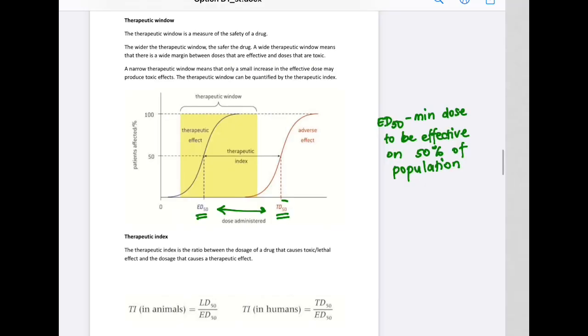This is known as the effective dose, ED50, effective dose for 50% of population. But we also need to know the lethal dose, which is the dose of the drug required to kill half of the population. This is known as lethal dose. Remember that we're talking about animal testing phase.